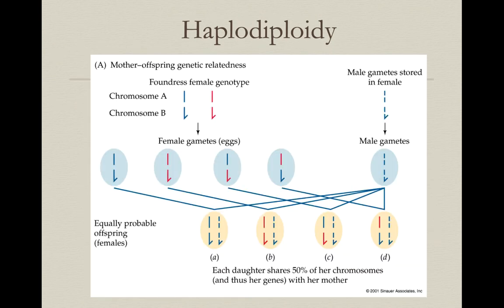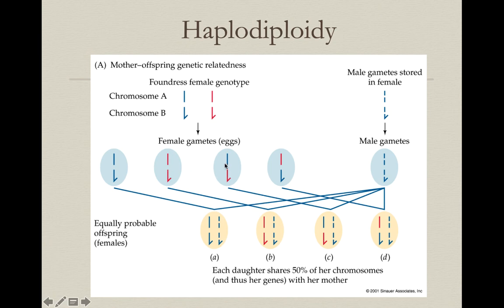Here's a graphic that may help you understand how the 75% comes about. Consider a simple case with just two chromosomes — A and B — one normal shape and one with a little hook. The queen is diploid, so she's got two copies of each. Through independent assortment, you get all possible combinations in the eggs she produces: both blue, both red, and one of each type being formed.